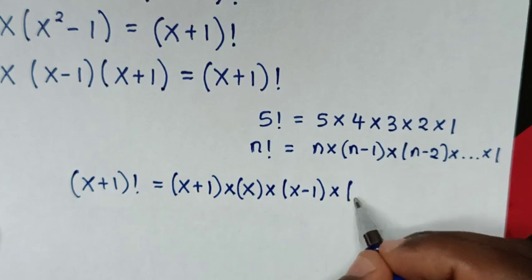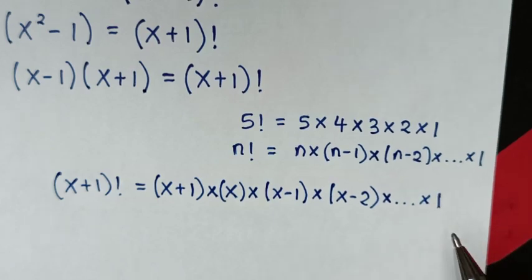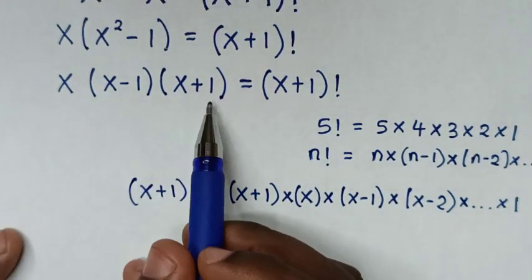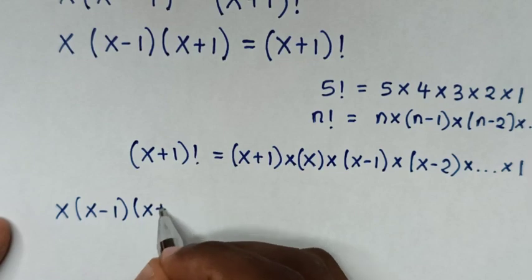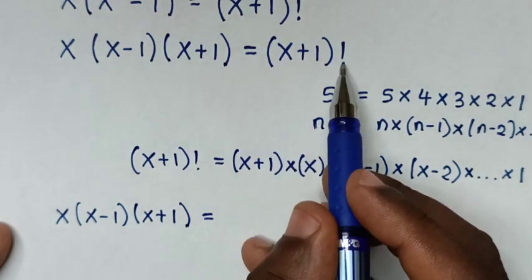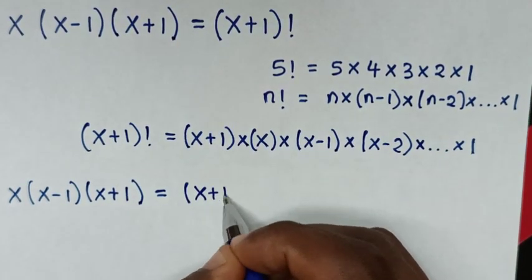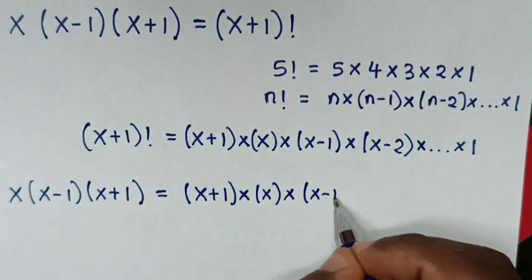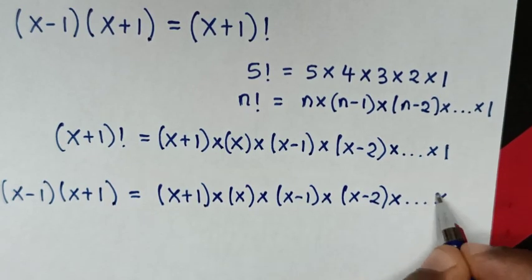For our problem, (x+1) factorial expanded is: (x+1) times x times (x minus 1) times (x minus 2), continuing down to times 2 times 1. So (x+1) factorial equals (x+1) times x times (x minus 1) times (x minus 2) times ... times 1.